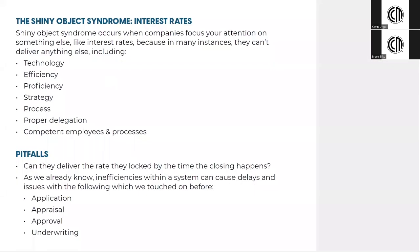Let's talk about the shiny object syndrome, which I had mentioned earlier regarding interest rates. What does this term mean and how does it relate to your mortgage? Shiny object syndrome occurs when companies neglect what's really important because they're focusing your attention on something else. If they can focus your attention on the shiny object — the supposed fantastic rate — they no longer have to worry about other, duller considerations.